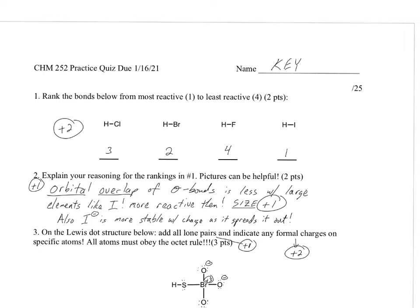Alright, practice quiz that we did for our first quiz, the key. So let's take a look at some of these questions and see how we did, just go through this a little bit. So rank the bonds below from most reactive to least reactive. Of course, one means most reactive, four least. Best way to do these ranking kind of questions is to always look for the extremes and look for things that are similar.